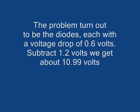The problem turned out to be the two diodes, each with a voltage drop of 0.6 volts. Subtract 1.2 volts, we get about the 10.99 volts we measured. And in all of these, we've always come out 1.2 volts high. So, remember to subtract 1.2 volts.